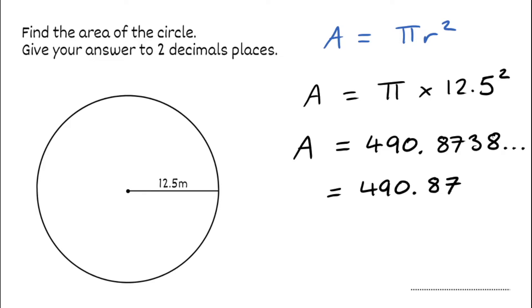So for our final answer, we've got 490.87. Looking at the units, the radius was in metres, meaning our area is going to be in metres squared. So that would be our answer for that one.